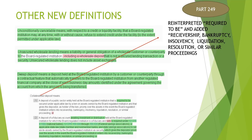Unsecured wholesale lending means a liability or general obligation of a wholesale customer or counterparty to the board-regulated institution. They removed the language 'including a wholesale deposit' and added that it is not a secured lending transaction or a security. Unsecured wholesale lending does not include asset exchanges. A perfect sweep deposit means a deposit held at the board-regulated institution by a customer counterparty through a contractual feature that automatically transfers to the board-regulated institution from another regulated financial company at the close of each day.